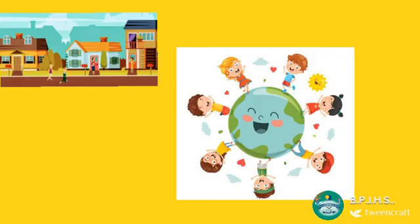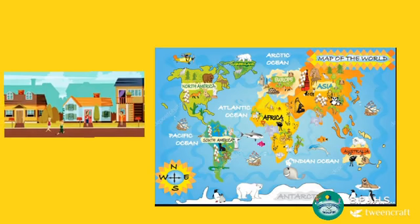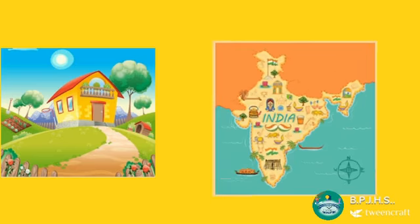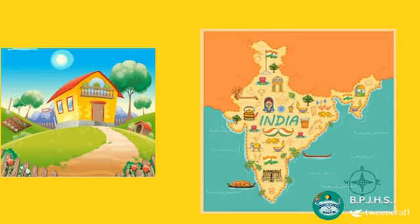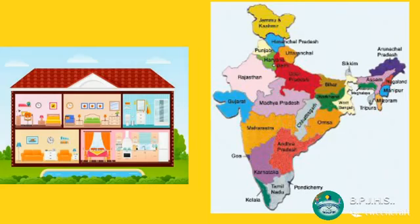In the same way, we all live on the Earth. Like a colony, on Earth there are many countries — our country is one of them. And its name is India. Like rooms, in our country there are many states.